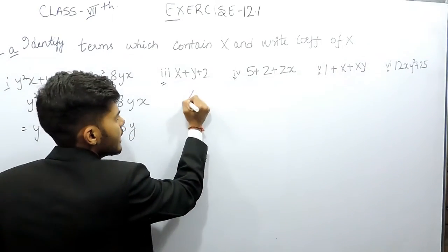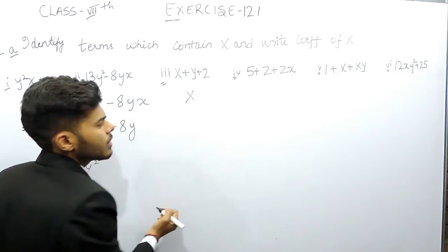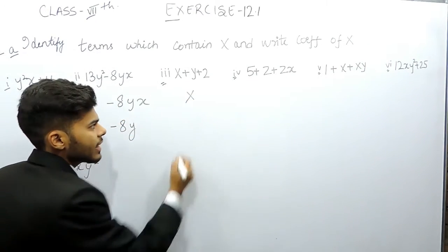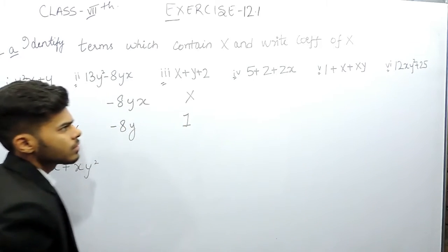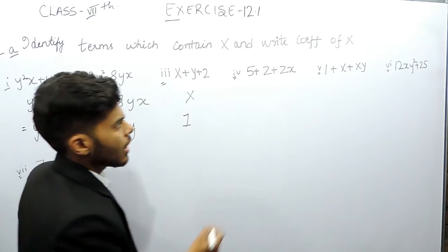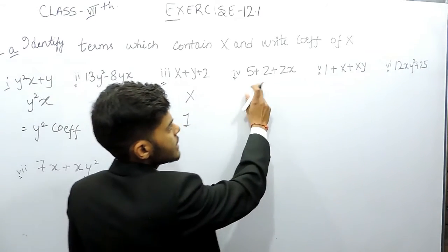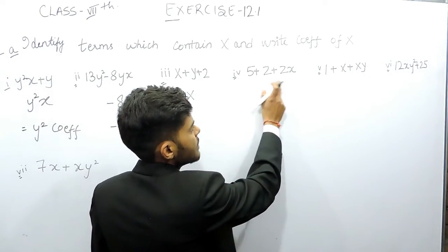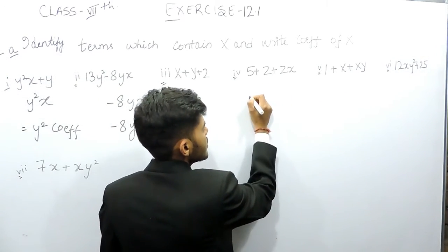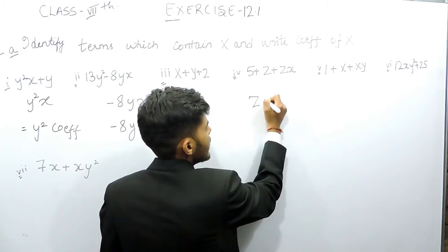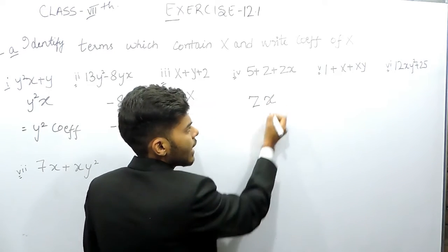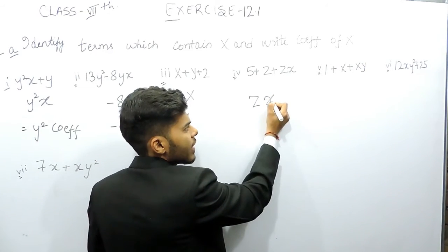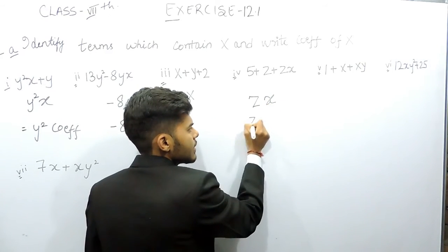In this one it's x only — the term having x — so its coefficient is 1. Now this is 5 plus z plus zx. So zx is the term having x in it and the coefficient of x is z.